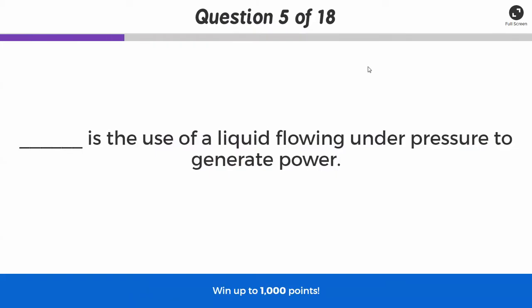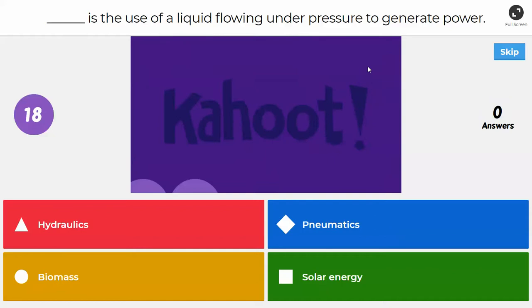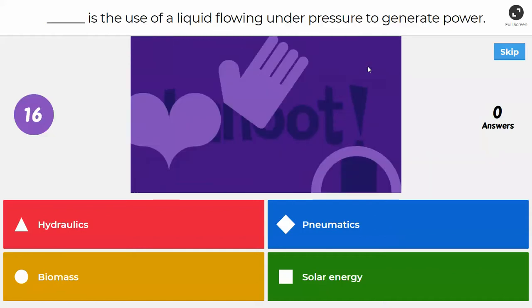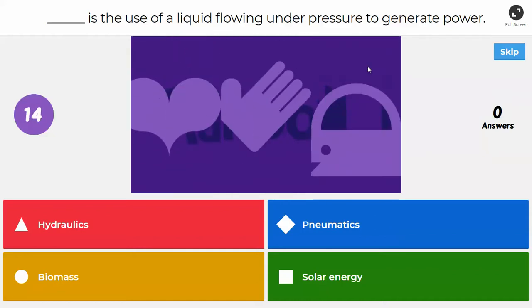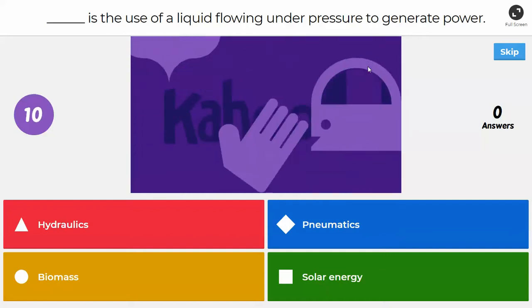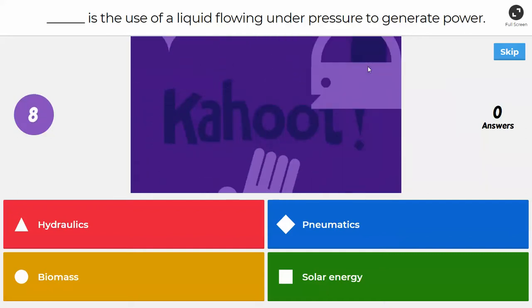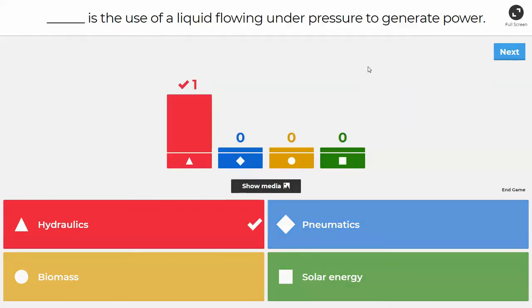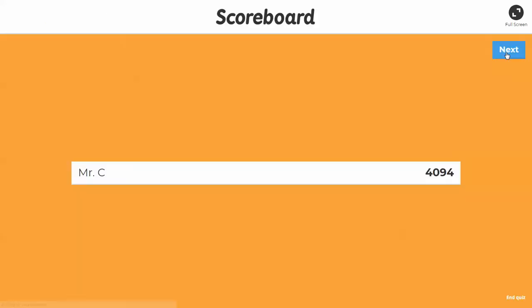Next question. Blank is the use of a liquid flowing under pressure to generate power. Is it hydraulics, pneumatics, biomass, or solar energy? So, the correct answer there is hydraulics. Hydraulics uses liquid. Pneumatics would use gas. And I do believe this question is duplicated, so we may see this question again, but we'll see.